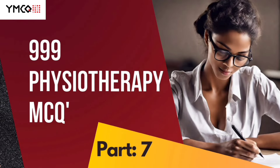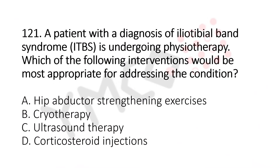Hello, welcome to part 7 of this series. Let's move to question number 121. A patient with a diagnosis of iliotibial band syndrome is undergoing physiotherapy. Which of the following interventions would be the most appropriate for addressing the condition? Option A: hip abductor strengthening exercises. Option B: cryotherapy. Option C: ultrasound therapy. Option D: corticosteroid injection.